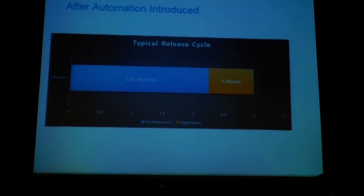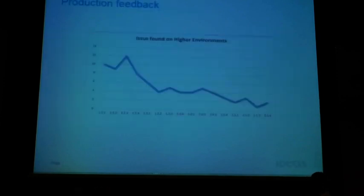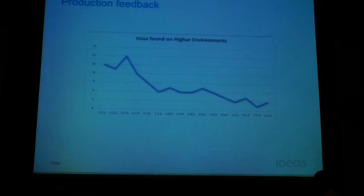This is the release cycle after that — we still see a regression period of three weeks. We'll discuss why. This is a very important thing: how did whatever automation we did using this approach impact things? Did it help us in reducing production issues? Yes, definitely. This graph shows our issues reported from production have gone down significantly over releases — from an average of seven to eight, down to maybe a couple of issues per release. A significant achievement.